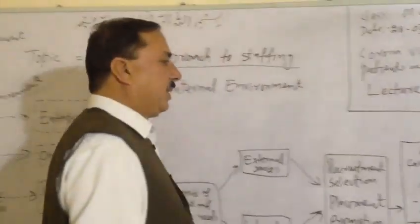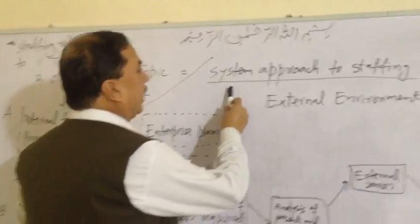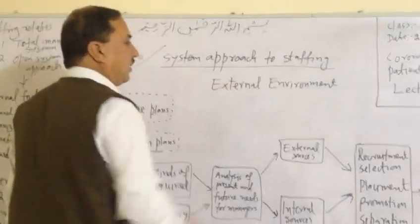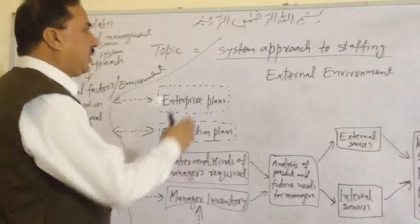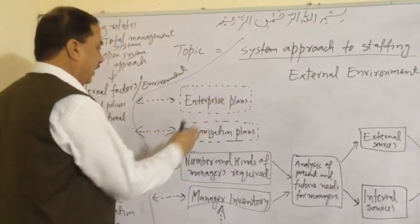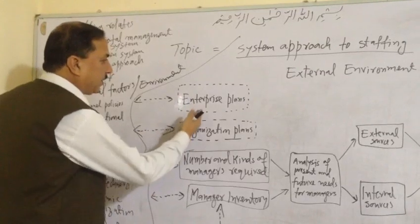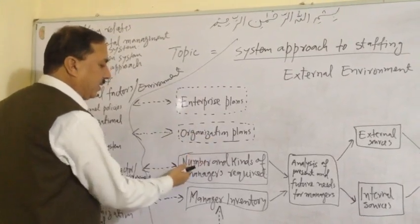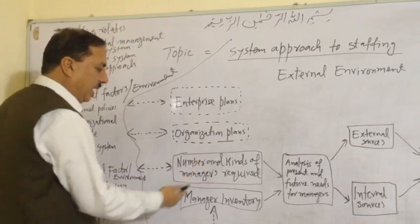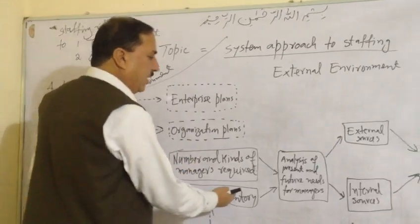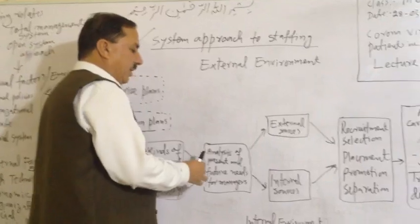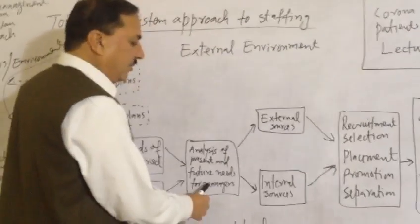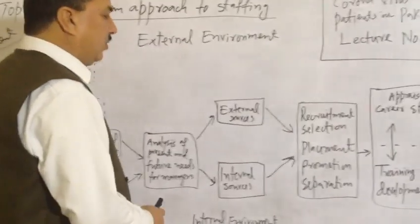As you remember, I was teaching you in the class — the last topic was the system approach to staffing. If you want to see the system approach to staffing, just have a look: the enterprise plans, organization plans, number and kinds of managers required, and then the manager inventory. Then you can see analysis of present and future needs for managers.